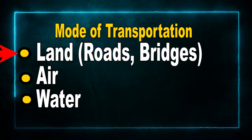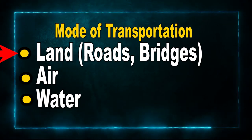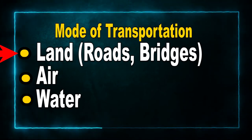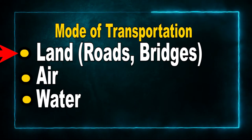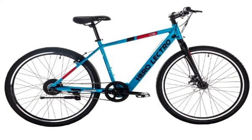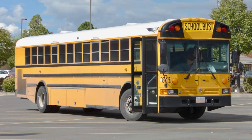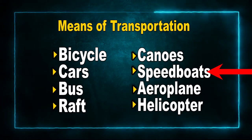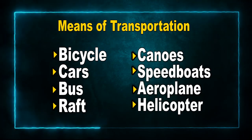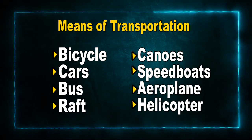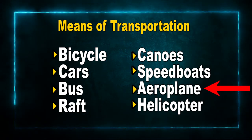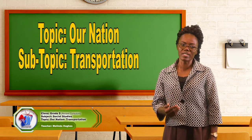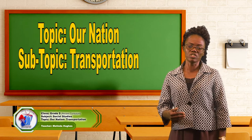For the land mode of transportation, we have roads and bridges, and the means by which transportation moves someone from one place to another includes a bicycle, a car, a bus, etc. On water we move by raft, canoes, and speedboats. In the air, the means of transportation would be aeroplane and helicopter.